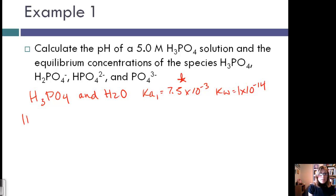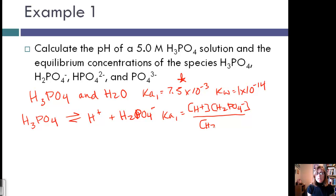So if we write the equation for that, we have H3PO4 for the first step, producing H+ and H2PO4-. And that Ka expression can then be written as H+ times H2PO4- over H3PO4. And that is the Ka1 value.